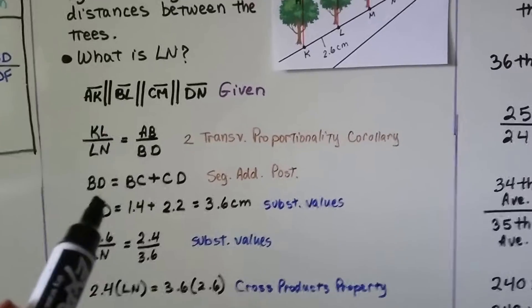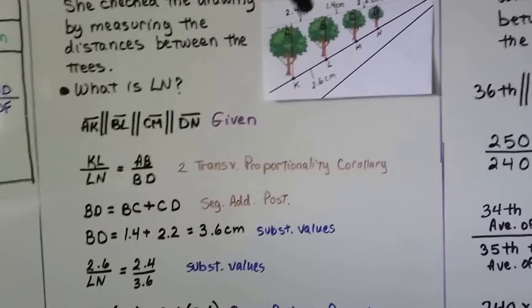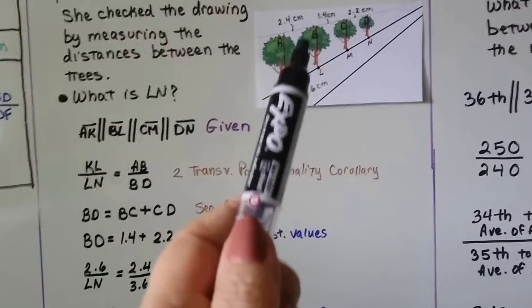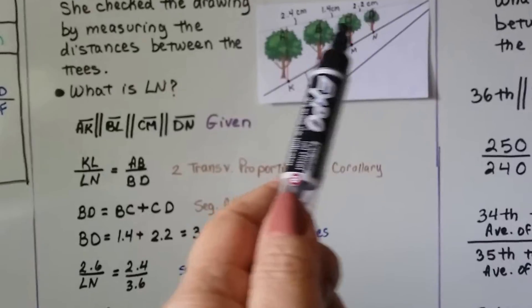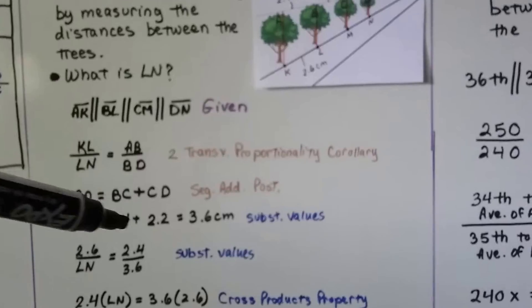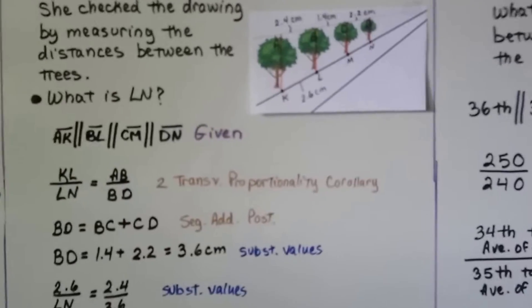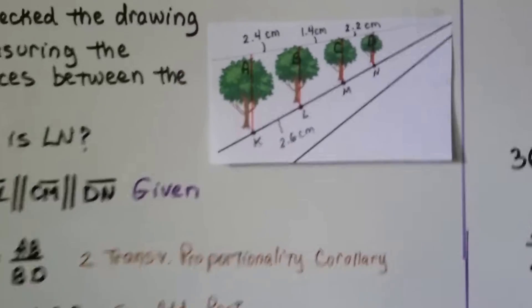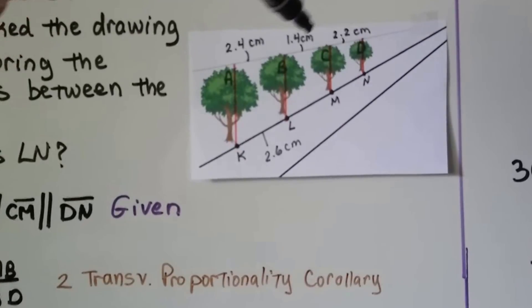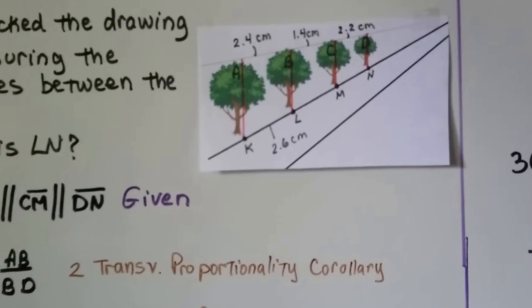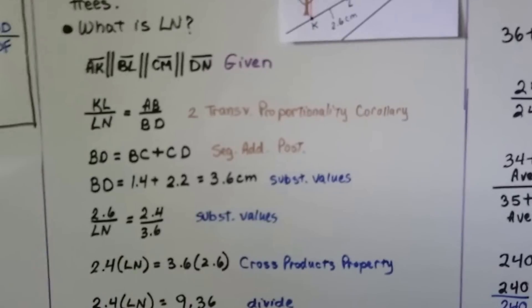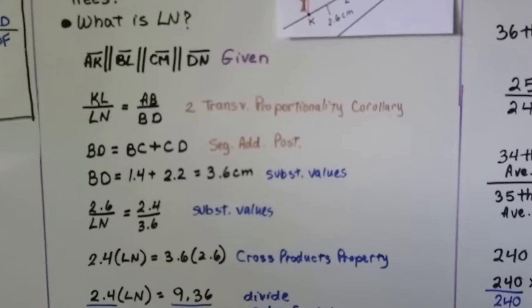The segment addition postulate says BD, from B to D, the top of this tree to the top of that tree, is equal to BC plus CD, adding these two together. And BC is 1.4, and CD is 2.2. We add these two together, and we're going to have BD, right? That makes sense. So that's going to equal 3.6 centimeters, substituting the values in.